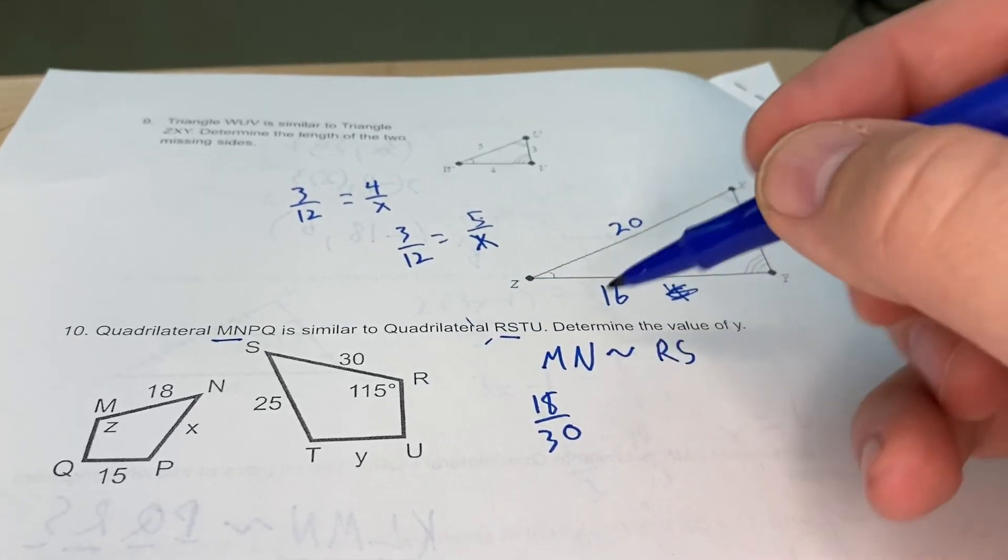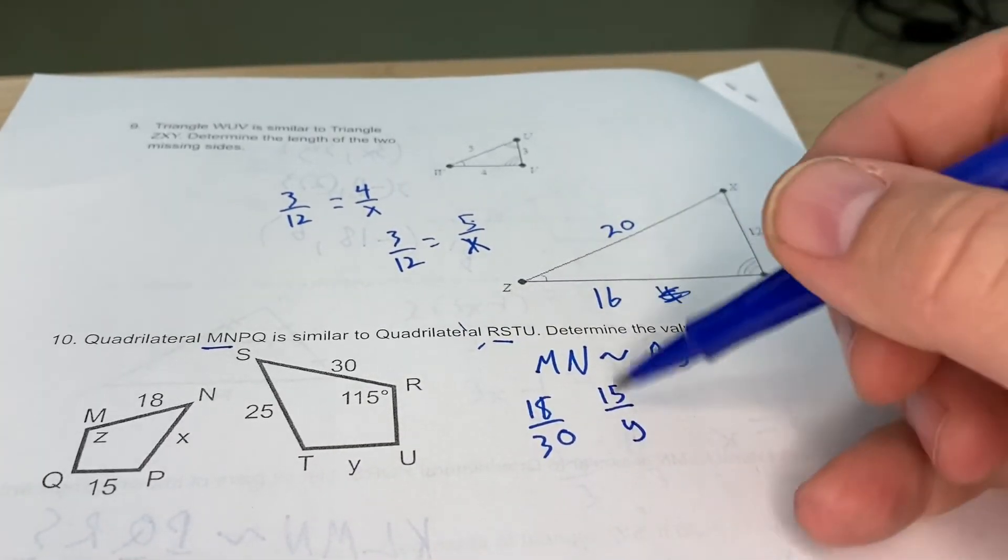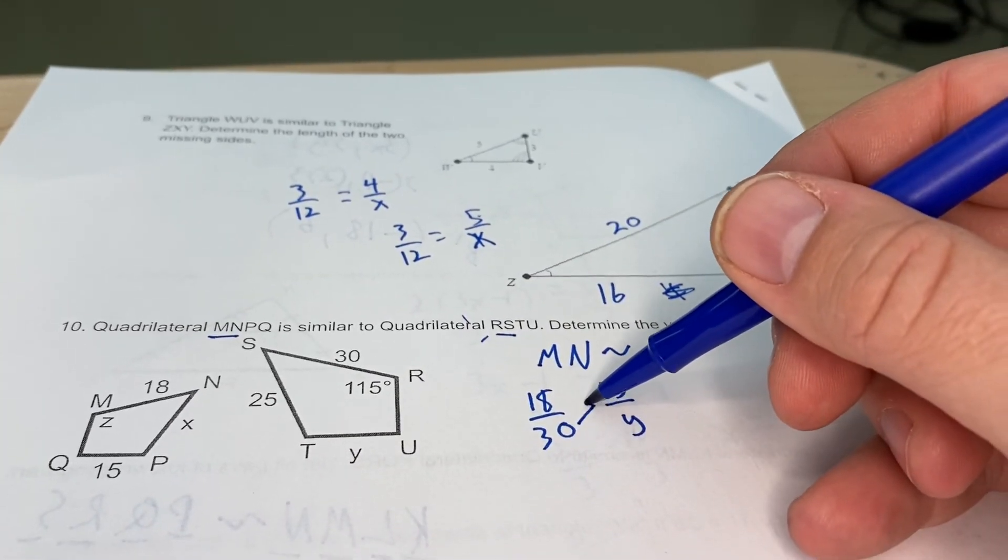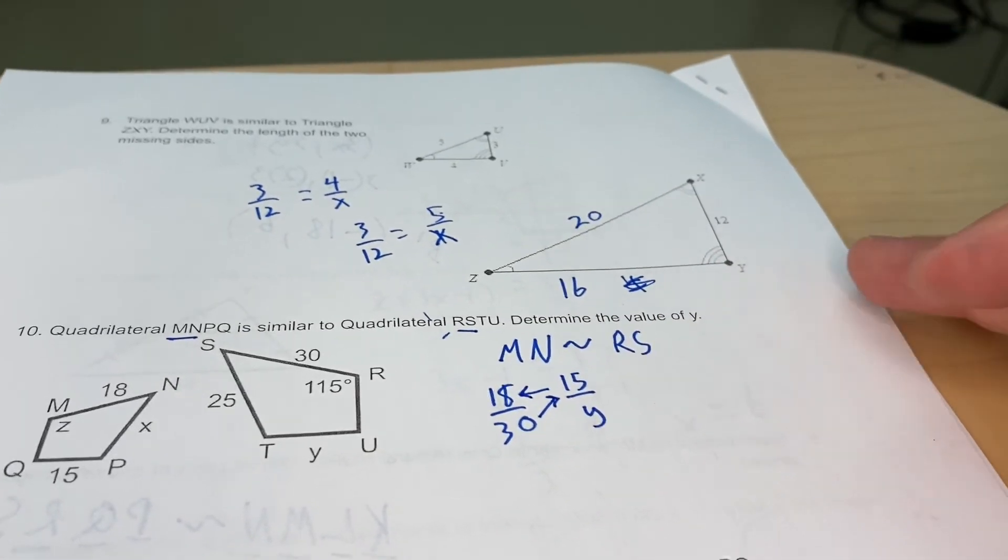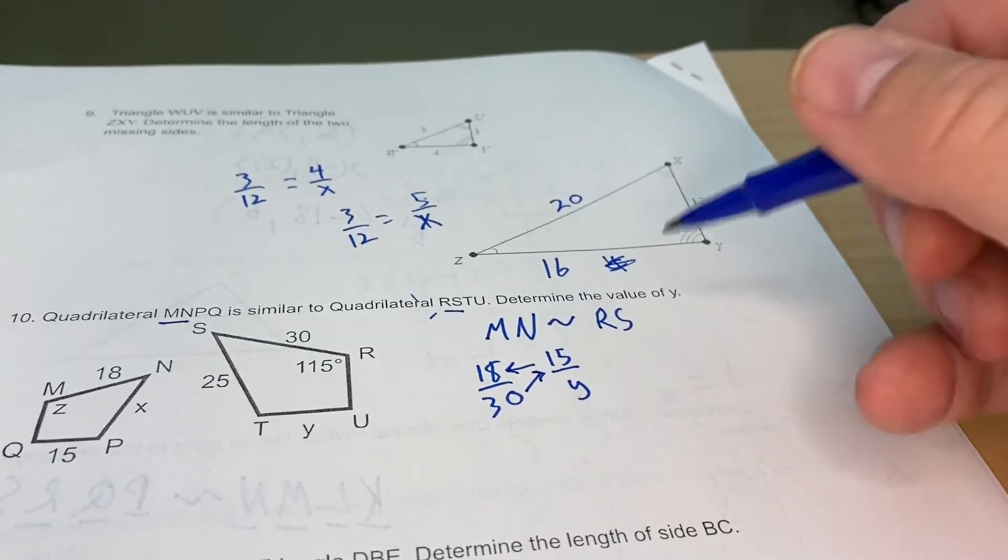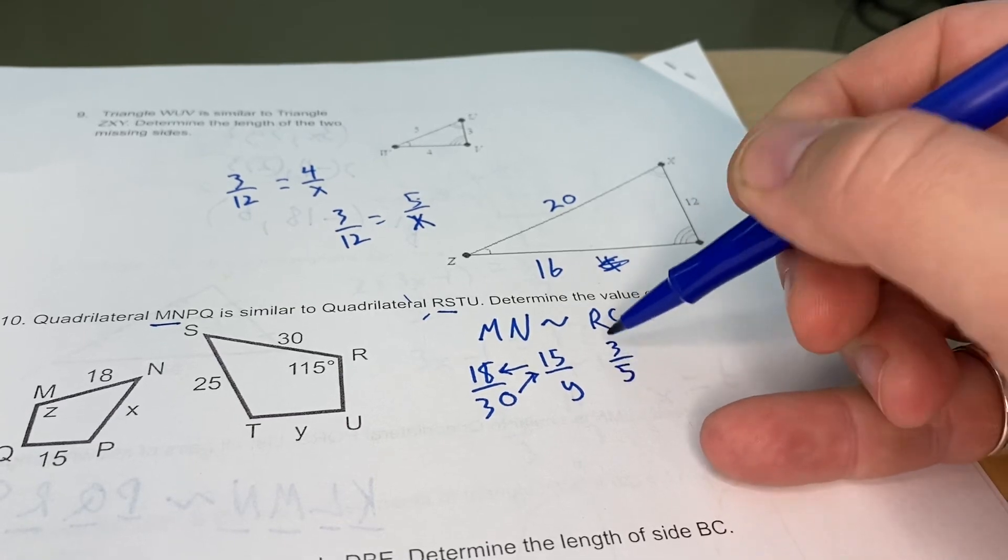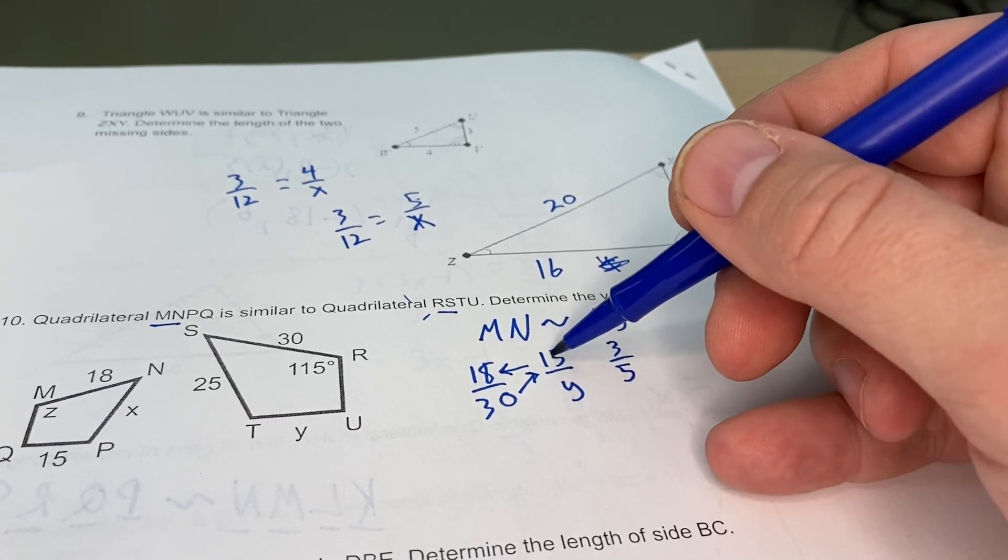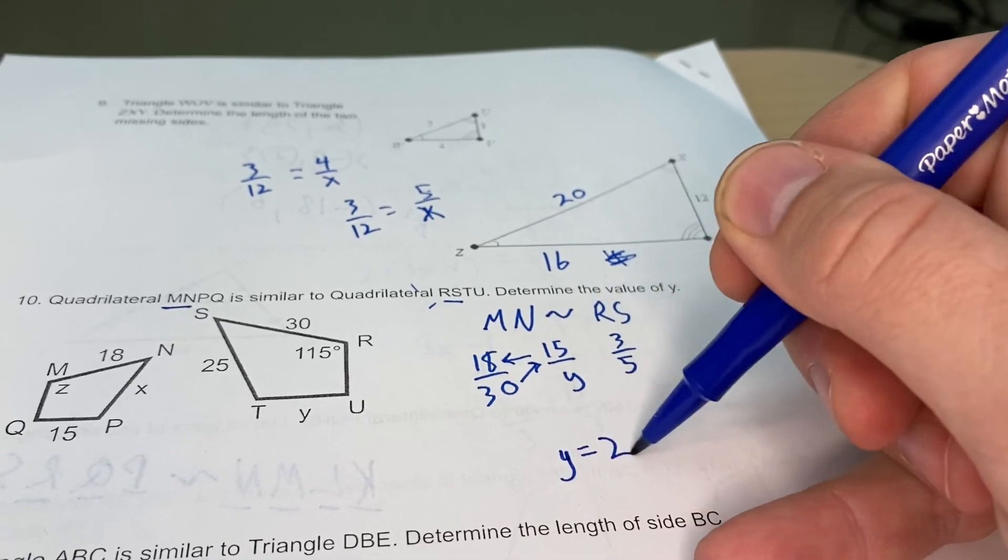Again, we can go 30 times 15 and then divide that by 18. If we're looking for kind of shortcuts here, but really 18 and 30 are both divisible by 6. That's 3 over 5. So 3 times 5 makes 15, so 5 times 5 means that y is going to be 25.